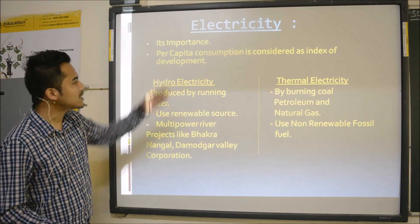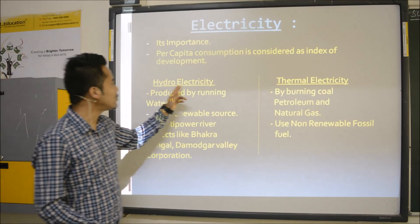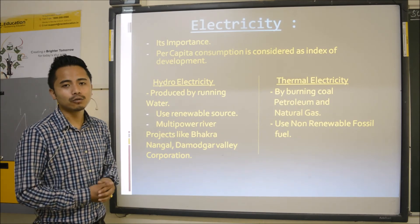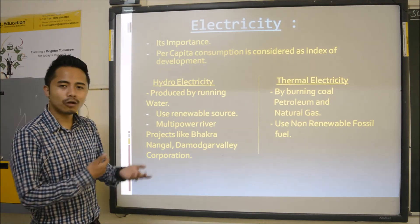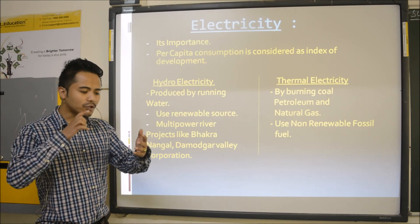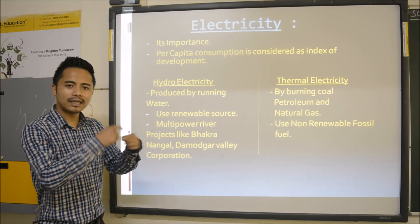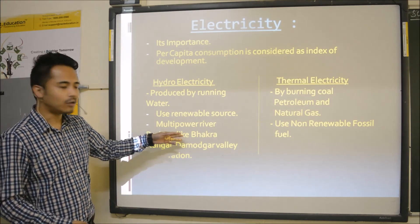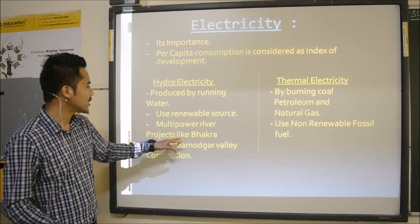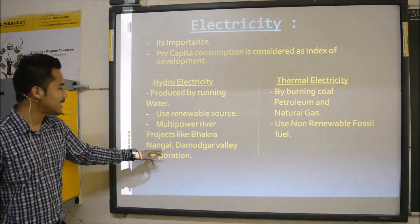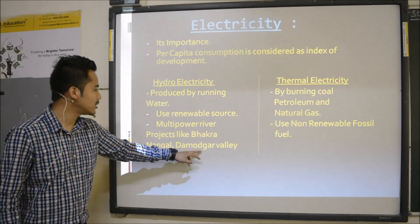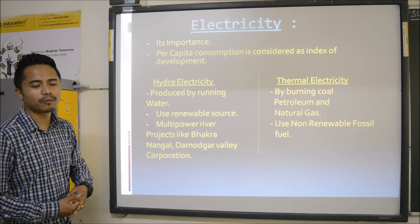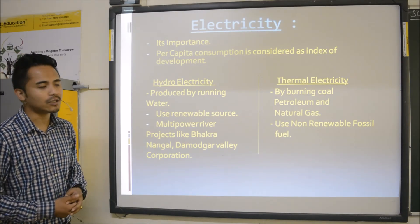Electricity can be divided into two types: hydroelectricity and thermal electricity. Hydroelectricity is electricity produced through running water — due to the force of the water, turbines rotate and generate electricity. It can also be called multi-power river projects — dams like Bakra Nangal Dam and Damodar Valley Corporation. These are dams which help in generating electricity in our country.